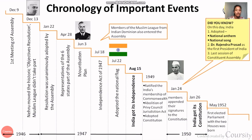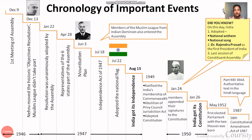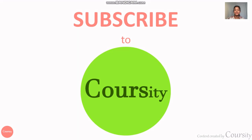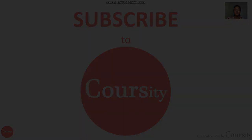In May 1952, the first elected Parliament was formed, with people elected in both houses, because elections were conducted in 1951–52. Finally, regarding the language — the Constitution was written in English, and after 1987, the Hindi text was also given equal standing. That's all for this lecture. Subscribe to Kursity, stay tuned. Bye!